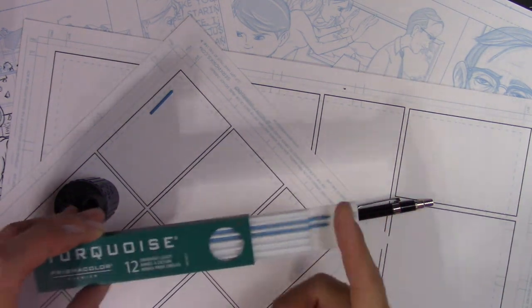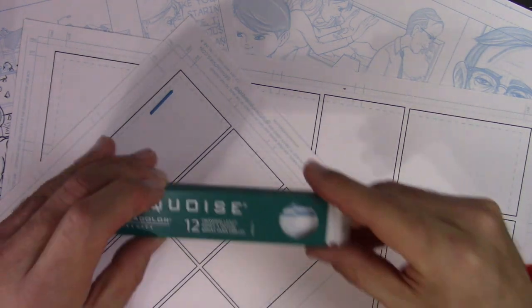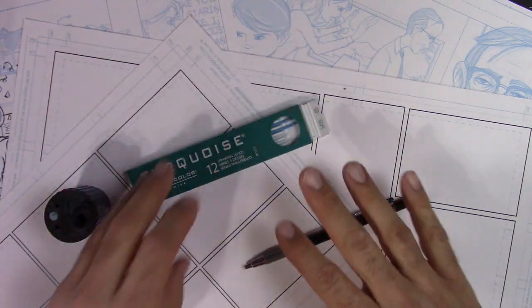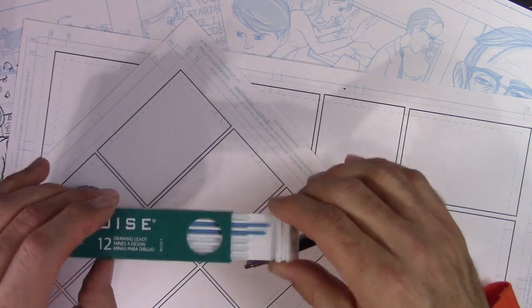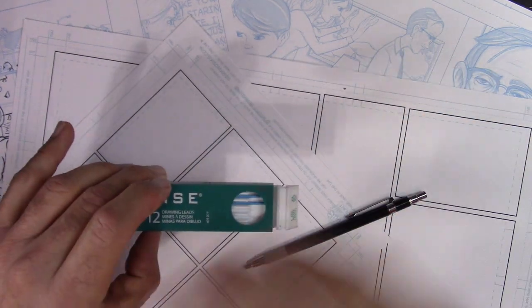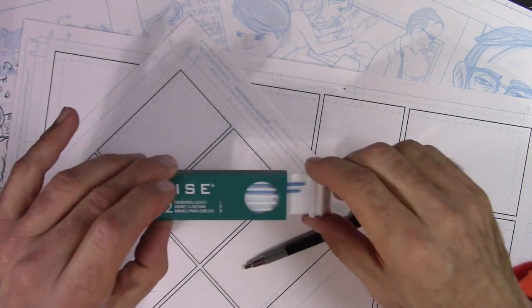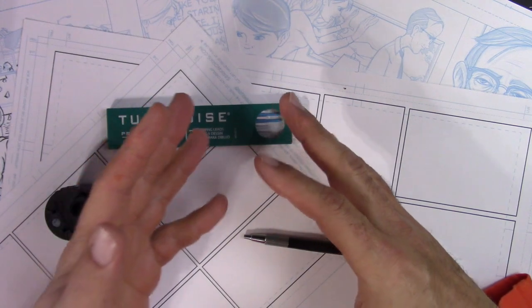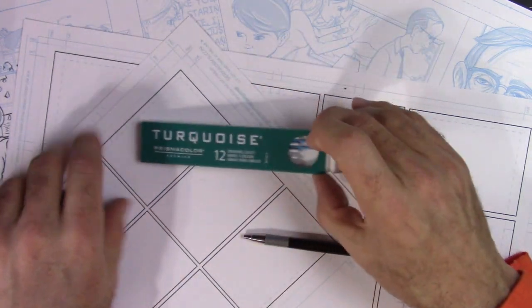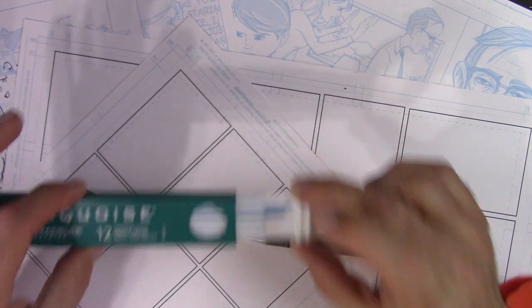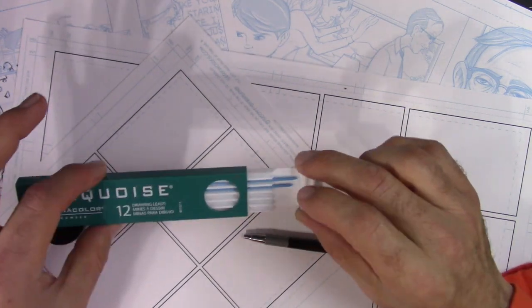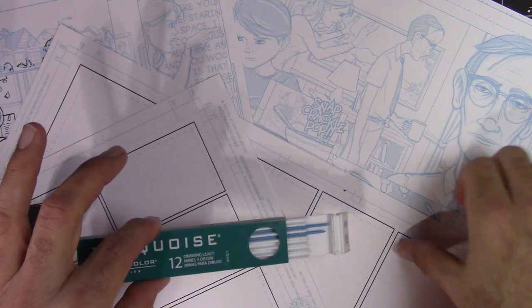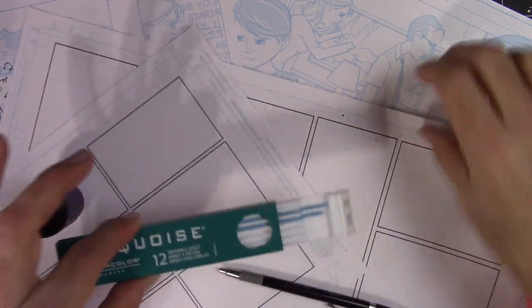They have these leads - these are the Prismacolor turquoise leads. These are non-photo blue. There is a reasoning behind the blue. Back in the day when you would take photocopies or photostats, anything you draw in this blue isn't going to show up. So you wouldn't have to erase that. You could go over and do your inking and you wouldn't have to erase all that stuff.